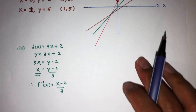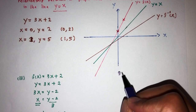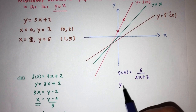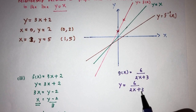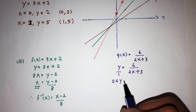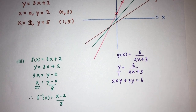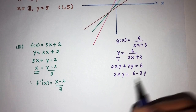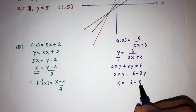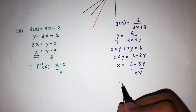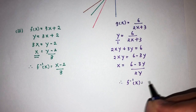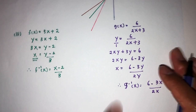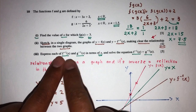Next, we find g inverse of x. We know g of x is 6 over 2x plus 3. We let y equal to g of x, which is 6 over 2x plus 3, and cross multiply to get 2xy plus 3y equals 6. Making x the subject: 2xy equals 6 minus 3y, so x becomes 6 minus 3y divided by 2y. Therefore g inverse of x is 6 minus 3x over 2x. Now we have both inverses expressed in terms of x as required.